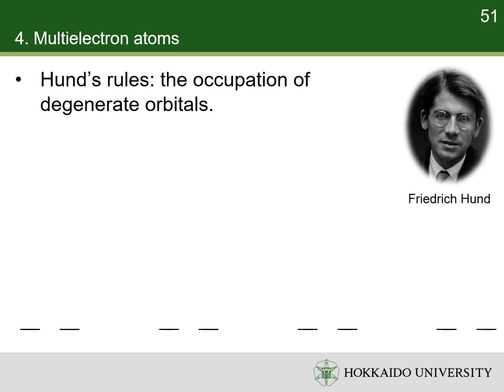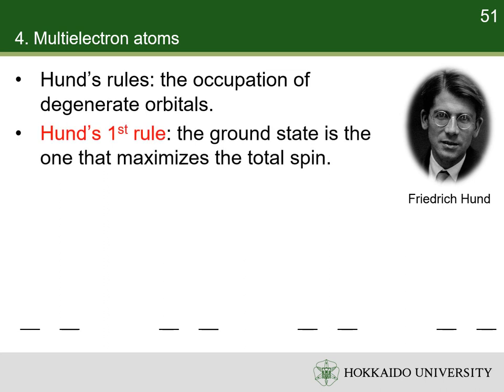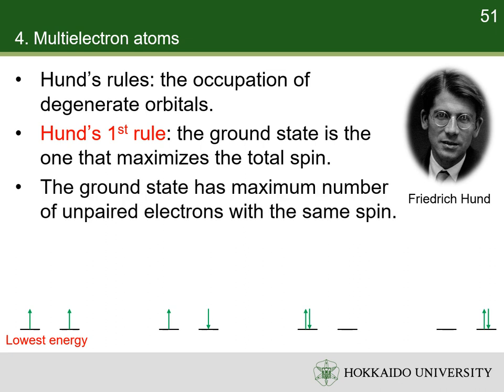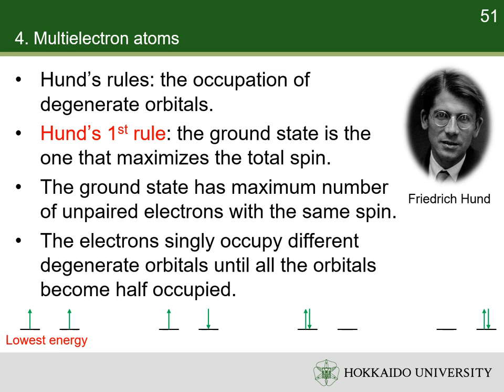Hund's rules refer to a set of rules that Friedrich Hund formulated around 1927, which are used to determine the distribution of electrons in degenerate orbitals. The first rule is especially important in chemistry, where it is often simply referred to as Hund's rule: for a given electron configuration, the state with maximum total spin has the lowest energy. Therefore, the ground state is the state with maximum number of unpaired electrons, which all have the same spin. The orbitals of the subshell are each occupied singly with electrons of the same spin before double occupation occurs. A simple explanation is that electrons in such a configuration are farthest from each other, so that the potential energy between them is minimized.